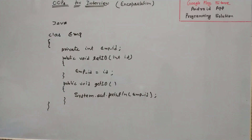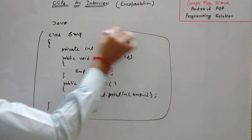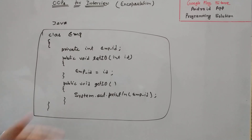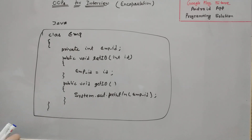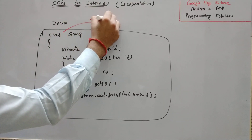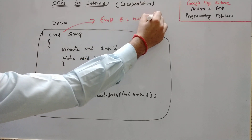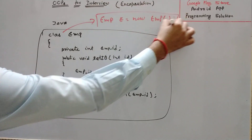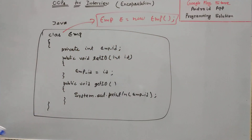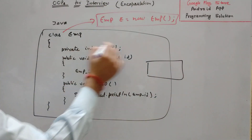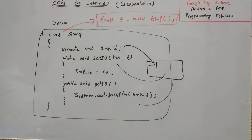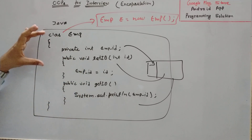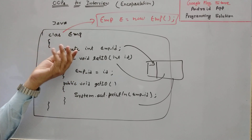This class is known as encapsulation because no one outside the class can change the employee ID, since it is a private member. From outside we cannot change private members of a class. Whenever we create an object — let's say EMP e = new EMP() — automatically a block of memory will be reserved for this object. This object will be created which has this ID and these functions inside it, meaning we have created a bundle or wrapper.